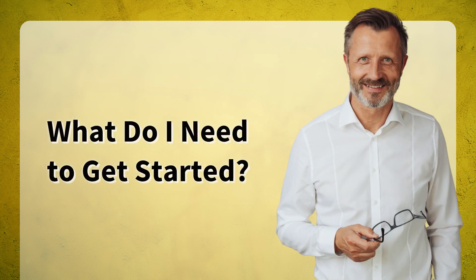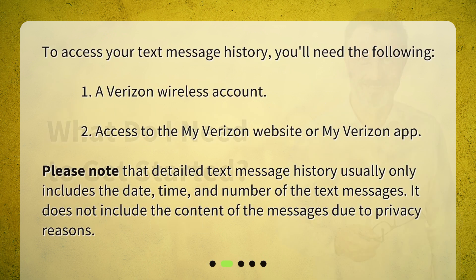What do I need to get started? To access your text message history, you'll need the following: 1. A Verizon wireless account. 2. Access to the My Verizon website or My Verizon app. Please note that detailed text message history usually only includes the date, time, and number of the text messages. It does not include the content of the messages due to privacy reasons.